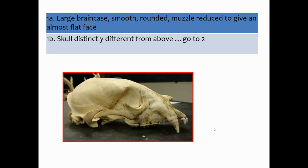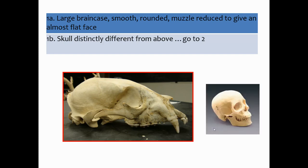The hardest part with these keys is figuring out what the description actually means. The first option is: large brain case, smooth rounded muzzle, reduced to give an almost flat face — that would be a human skull. This one clearly doesn't look like that, so skull distinctly different from above — we go to two.